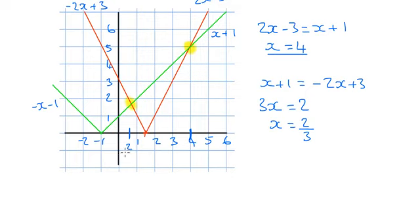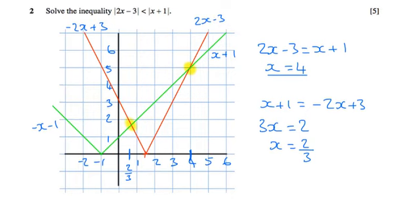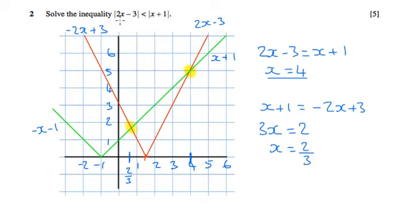So this is 2 thirds here, and we've got 4 here from before. The final answer is that the modulus of 2x minus 3 is less than the modulus of x plus 1 when x is more than 2 thirds but less than 4.